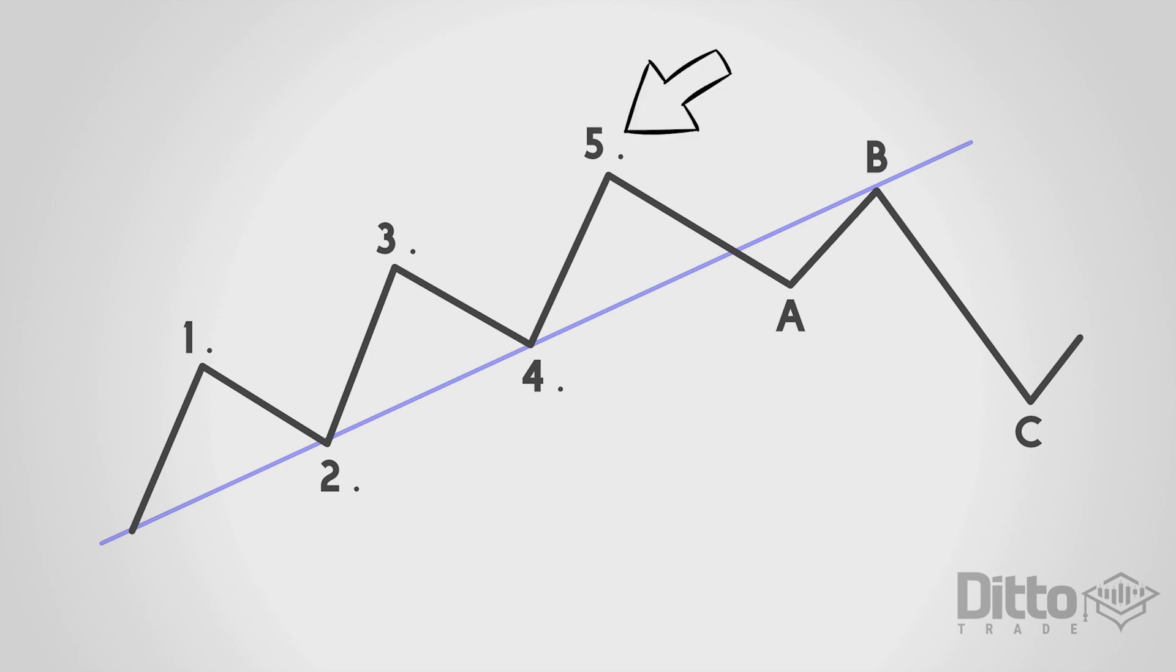The impulse wave has five waves moving in the direction of the overall trend. This is followed by three waves moving in a correction against the trend. These two waves made up of five and three moves then become the two subdivisions of the next higher wave move.